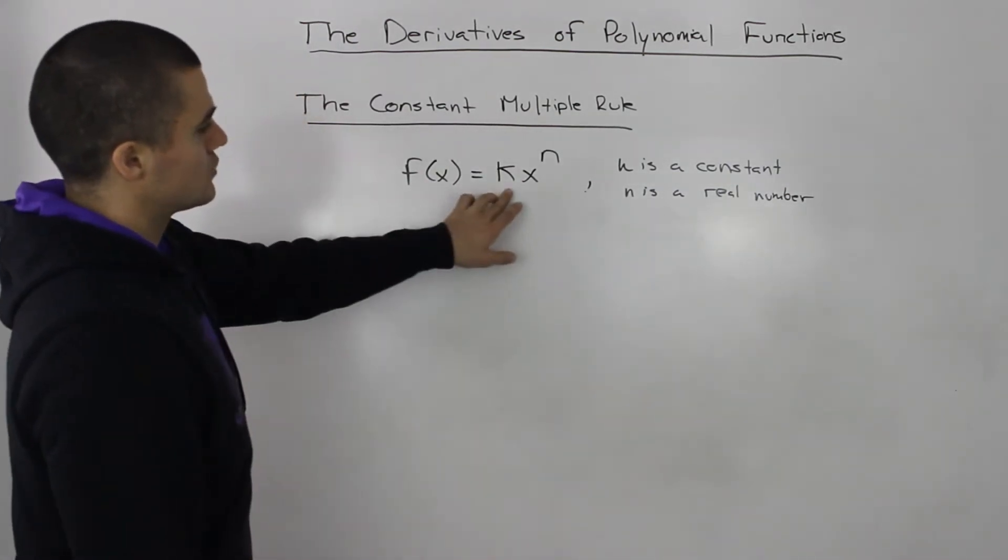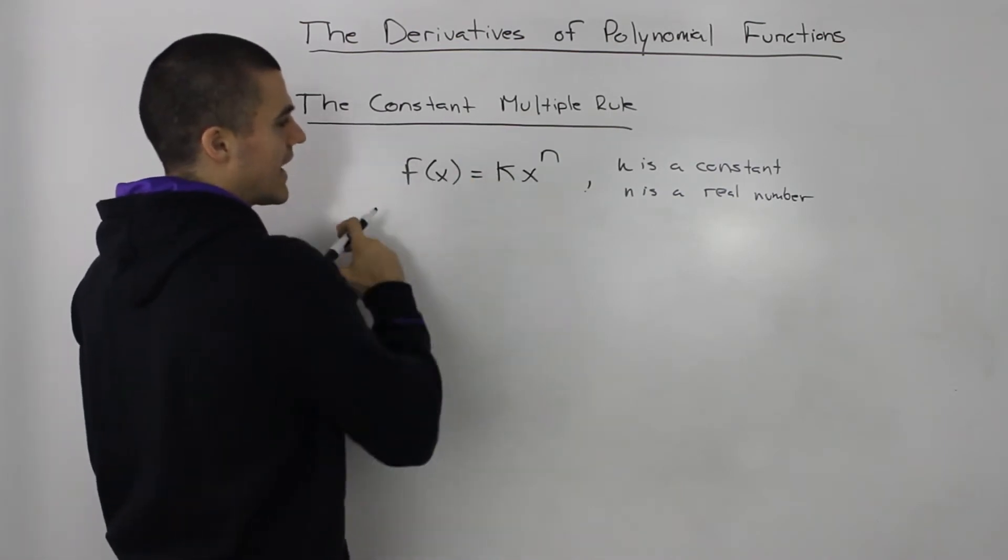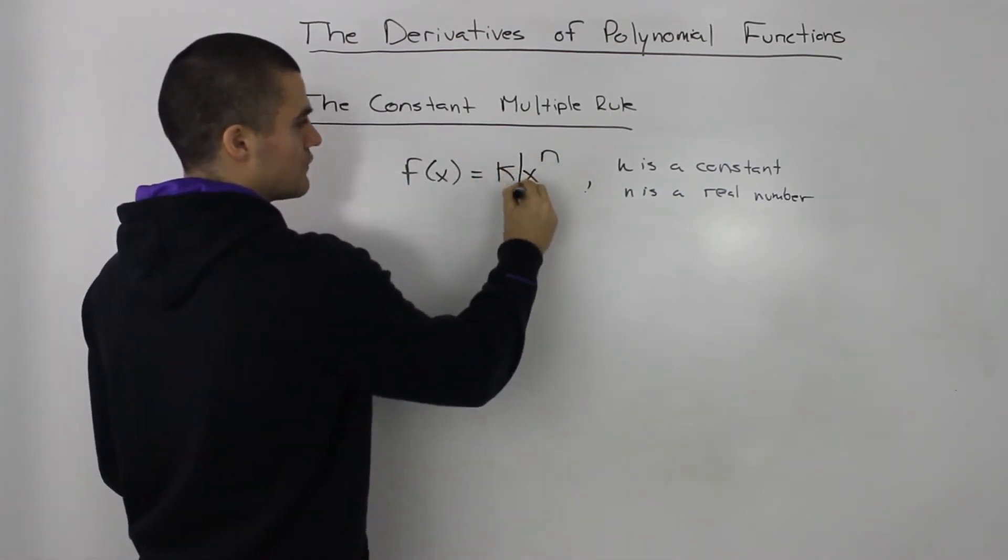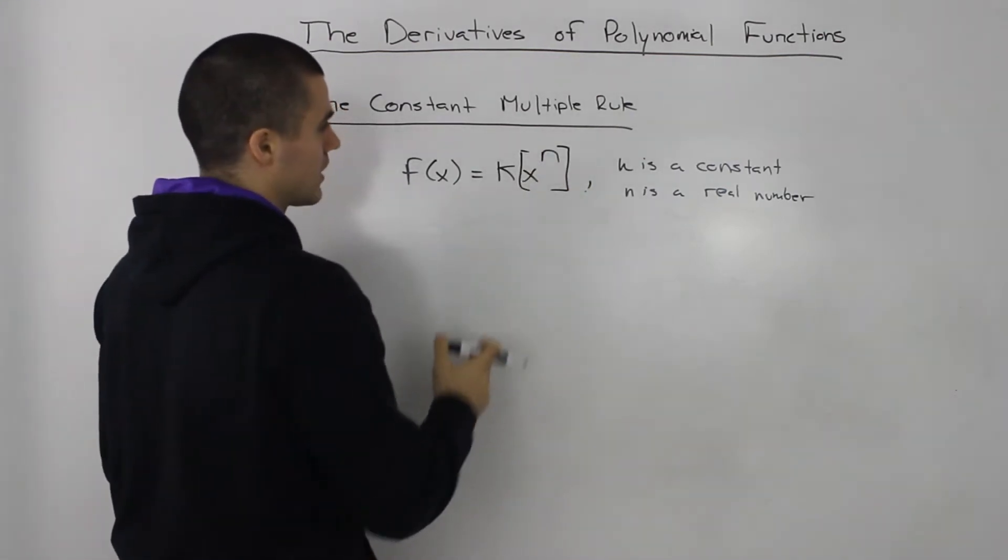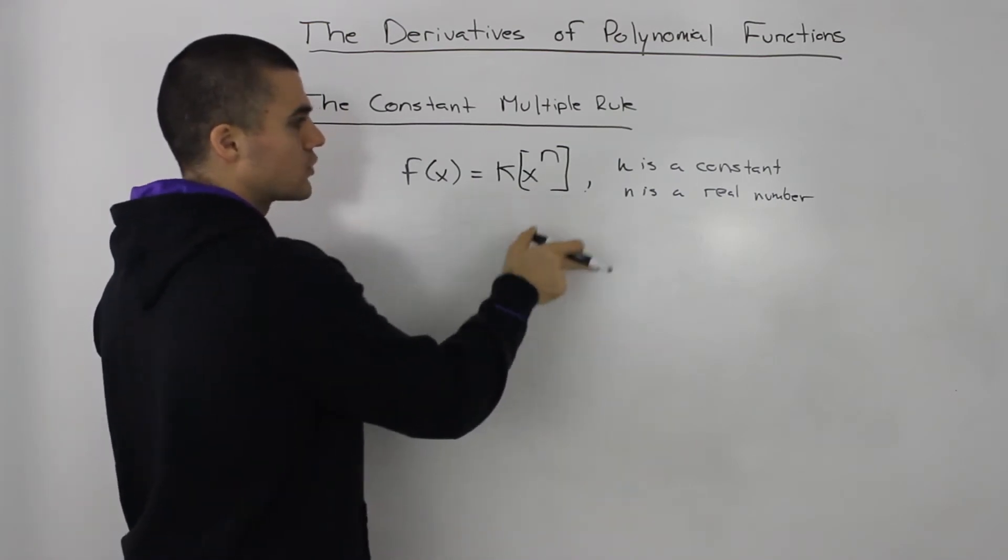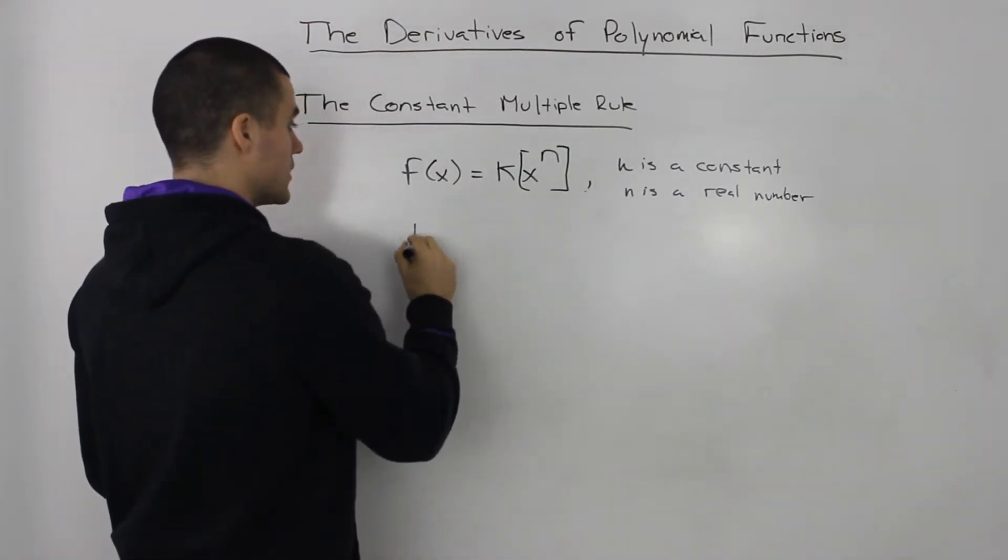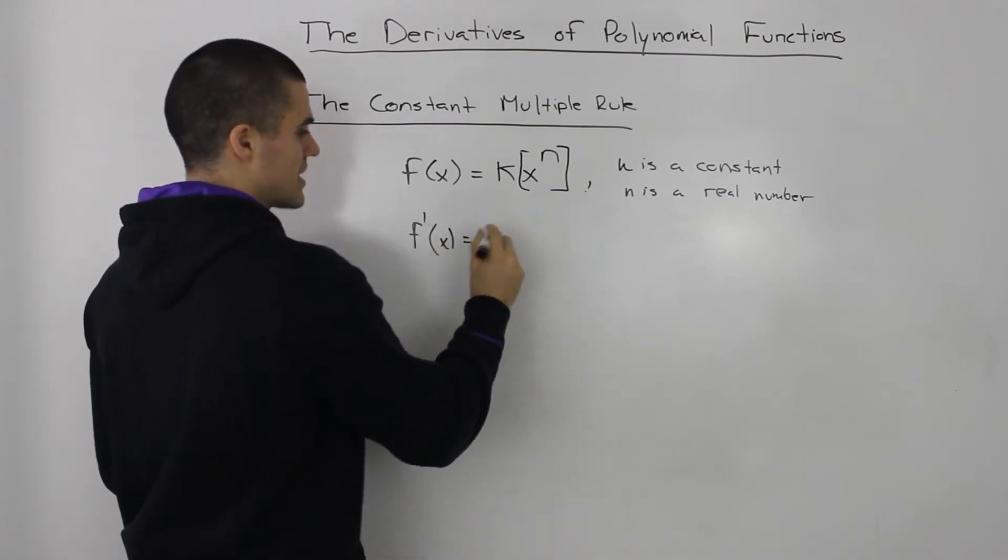Basically what you can do is take the k out and then just take the derivative of this polynomial function here, x to the n, right? And then you just apply the power rule to that. That's the same function that we derived in the videos before. So basically the derivative will be - we separate the k out, and then the derivative of this is just, you remember, you bring the n down, x to the power of n minus 1.